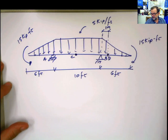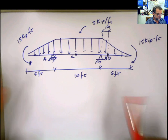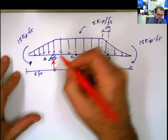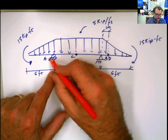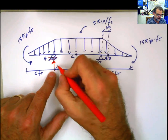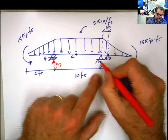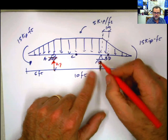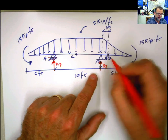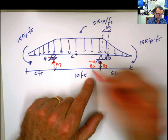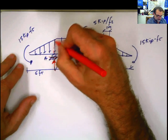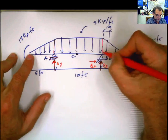First thing first. The first thing we have to do is calculate the reactions. This is going to be a roller with a reaction force Ay pointing perpendicular to the surface. This is a pin, and we know that the pin will have two forces: vertical My and horizontal Vx. To calculate the reactions, I'm going to decompose this into triangle, triangle, and rectangle.